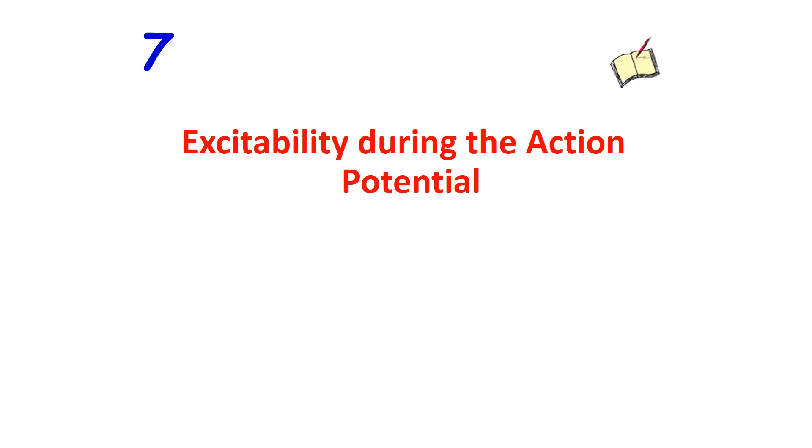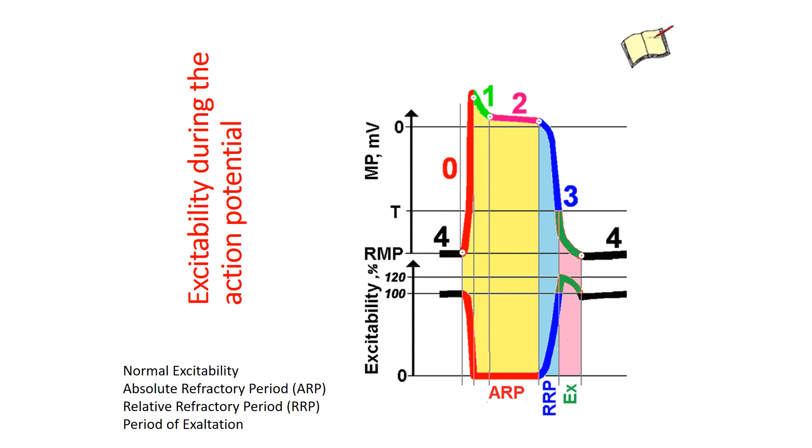Cardiac excitability during the action potential. During the development of the action potential, a change in the excitability of excitable tissues occurs. These changes are of a phase nature. Each phase of the action potential corresponds to a certain period of excitability.